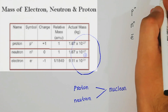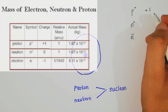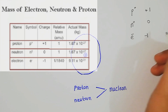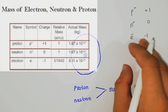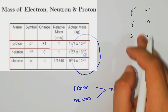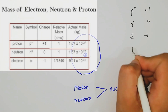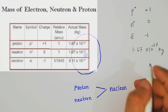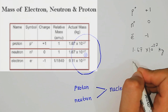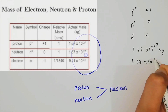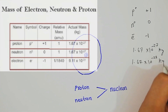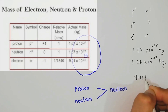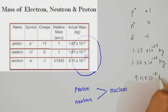The charge on a proton is +1, the charge on a neutron is 0, and the charge on an electron is −1. The mass of a proton and neutron are the same: 1.67 × 10⁻²⁷ kg. The mass of an electron is 9.11 × 10⁻³¹ kg.